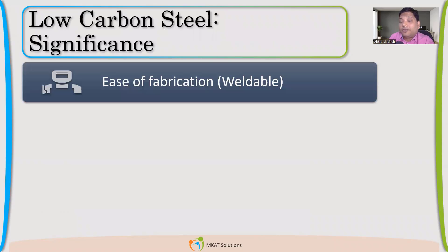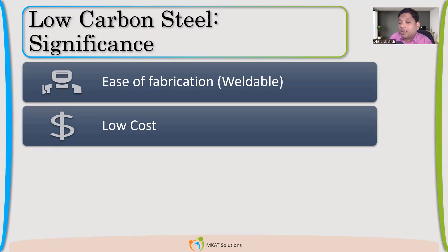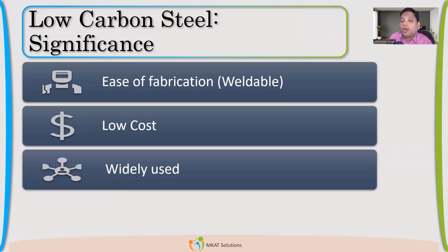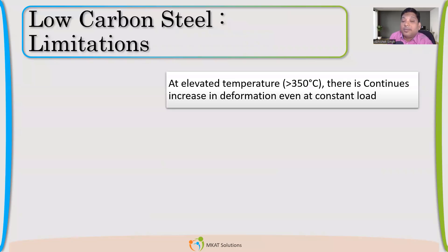The significance and advantages of low carbon steel include ease of fabrication and good weldability. Forming operations can be performed very easily, and the cost is low — not because it is low-grade, but because it is the most widely used and produced in bulk. It is the most preferred material for low and intermediate temperature applications.